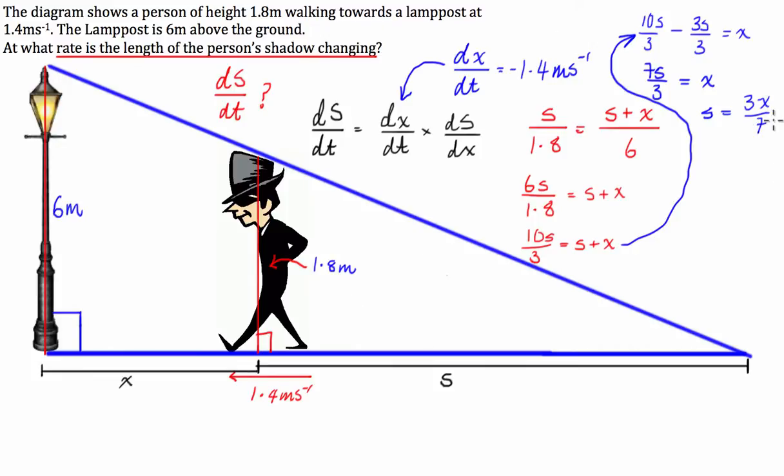And what we can get from that is that because this is a linear equation, the derivative of S with respect to x is going to be a constant, which is going to be equal to 3 over 7.